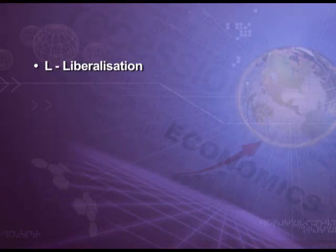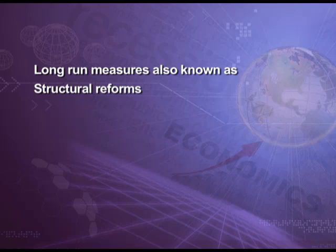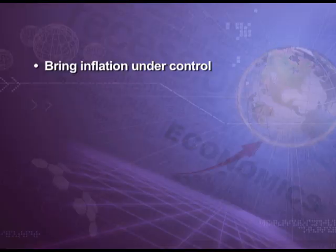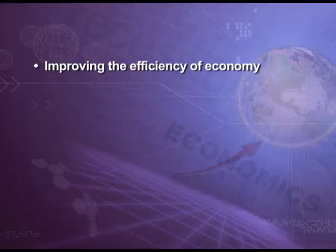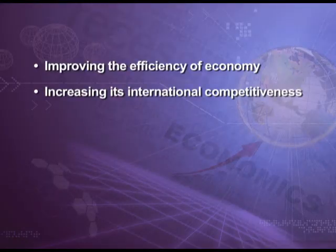This economic policy is called 'new' because its measures are just opposite to the economic policy prior to 1991. This new economic policy involves mainly three economic reforms to speed up the pace of economic development — L for Liberalization, P for Privatization and G for Globalization. This economic policy can also be divided into short run measures, known as stabilization measures, and long run measures, known as structural reforms. Short run reforms focused on two objectives: to bring inflation under control and to improve the balance of payment. Long run measures focused on improving the efficiency of the economy and increasing its international competitiveness.